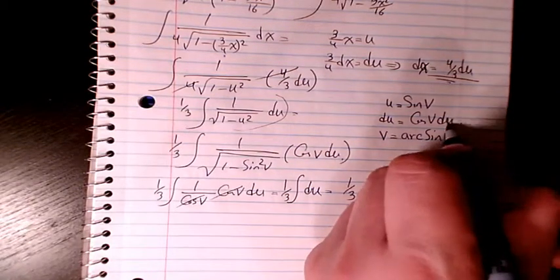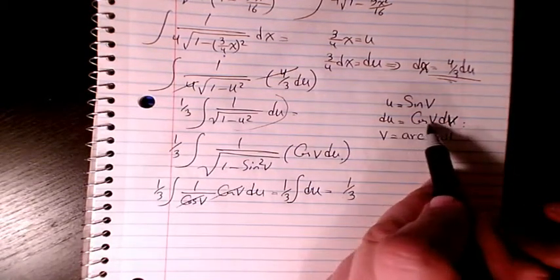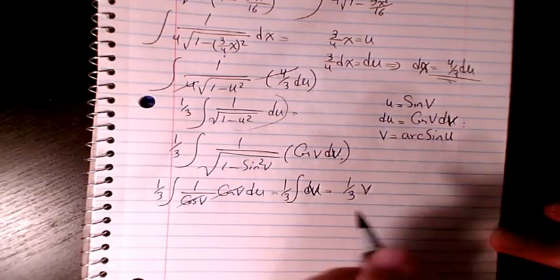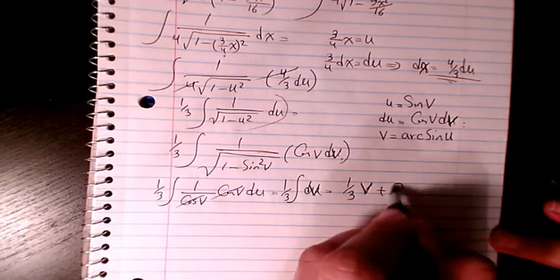Actually this one is dv. du is cosine v dv, so here dv and dv, so integration will be 1 over 3 times v plus c.